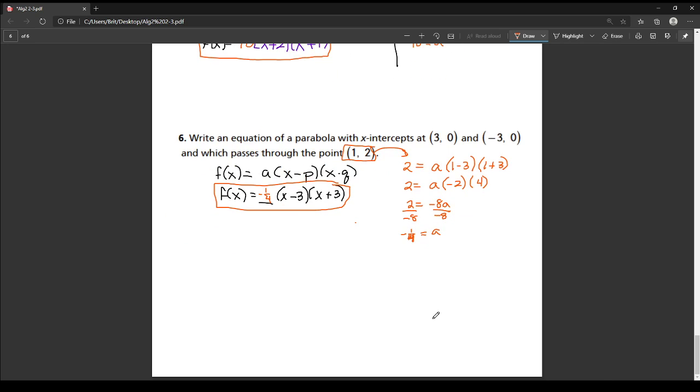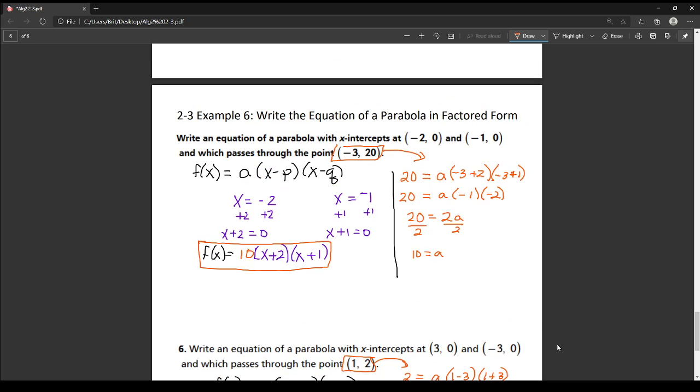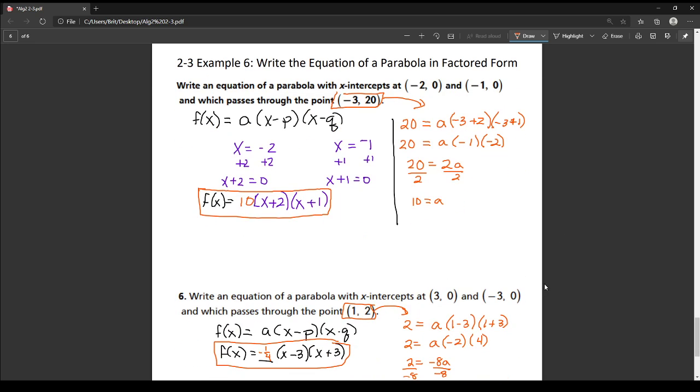So that is how we write the equation of a parabola in factored form when we're given the x-intercepts and a point. Until next time.